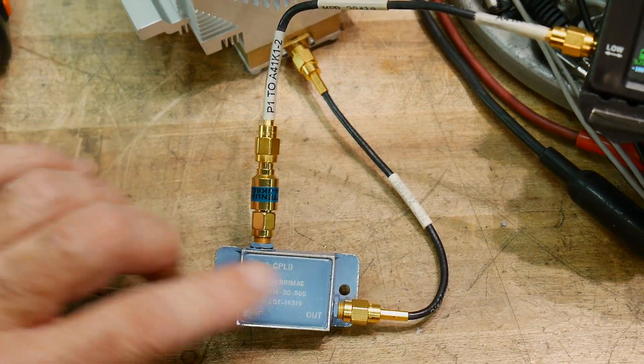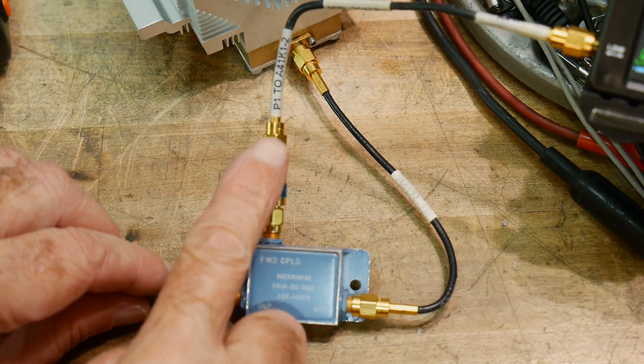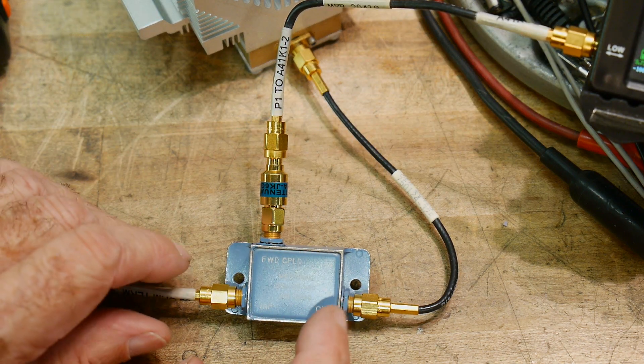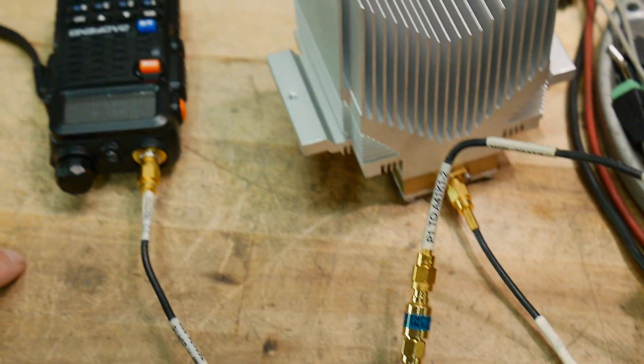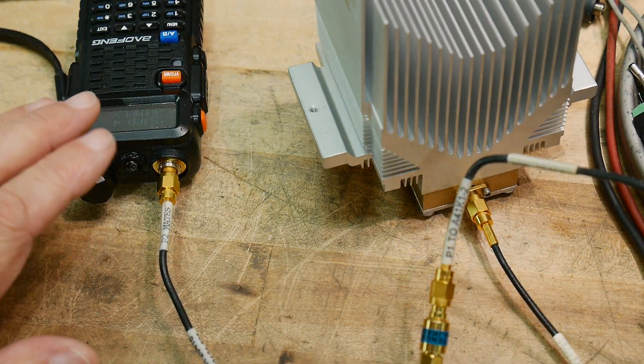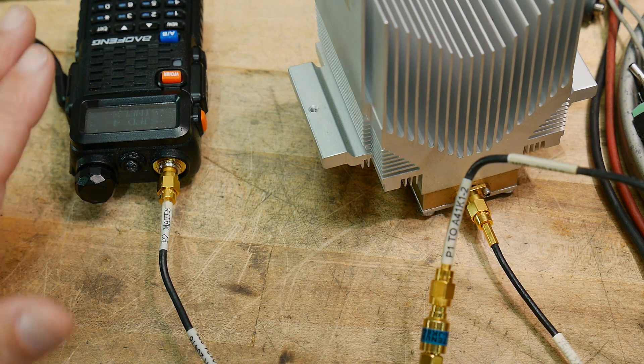Now while it's transmitting, we're going to steal a little bit of that power, and we're going to send it this direction. Now if we are transmitting with the radio, I know that the radio is transmitting with 4.5 watts. 4.5 watts is plus 36.5 dBm.